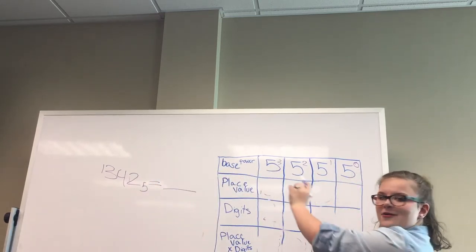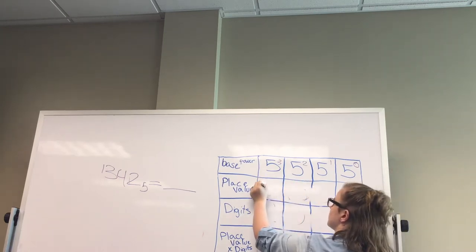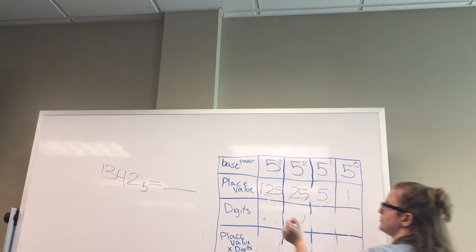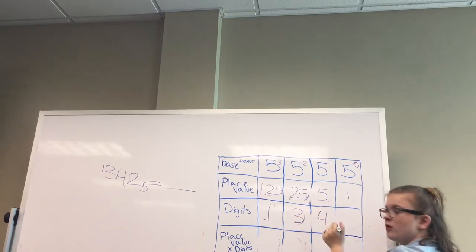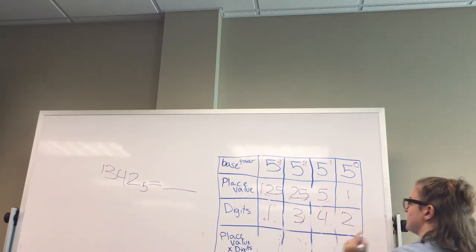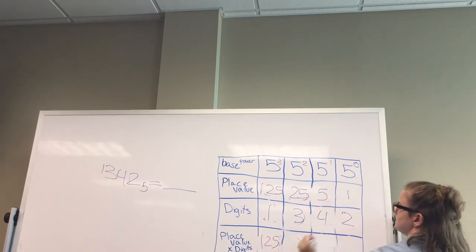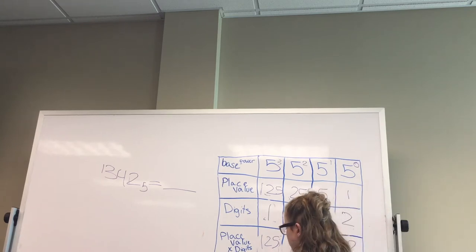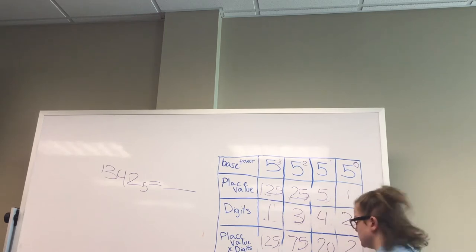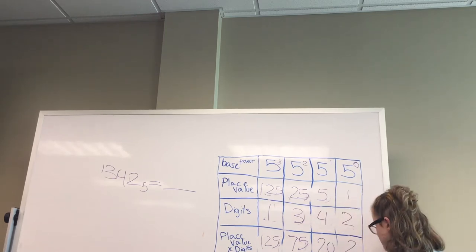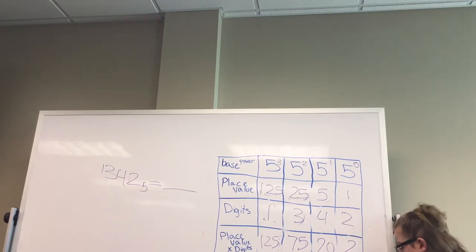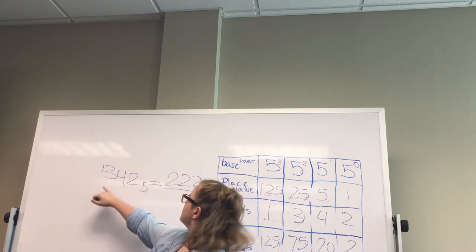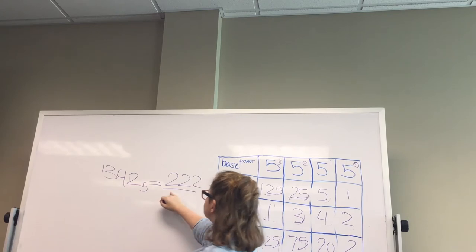Let's do one more example: 1342 base five. Our place values are again 125, 25, five, and one. The digits are one, three, four, and two. Multiplying by column: 125 times one is 125, 25 times three is 75, five times four is 20, and one times two is two. Adding them: 125 plus 75 plus 20 plus two equals 222. So 1342 base five equals 222.